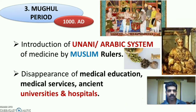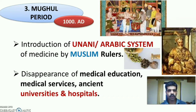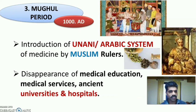The Mughal period introduced the Unani or Arabic system of medicine, which was practiced during this era. There was also a disappearance of medical education, medical services, and ancient universities and hospitals during the Mughal period.